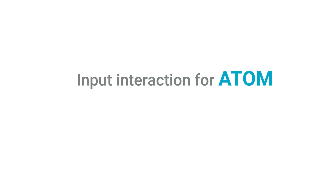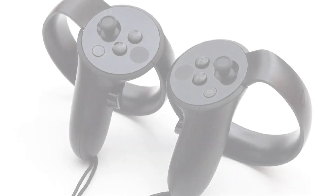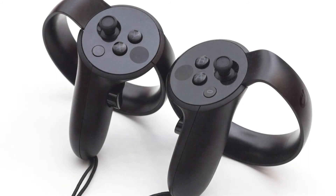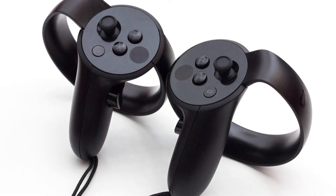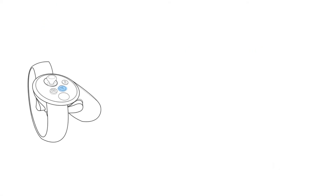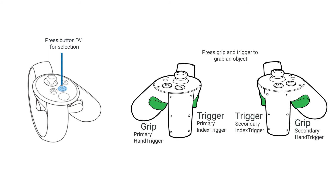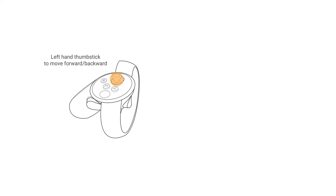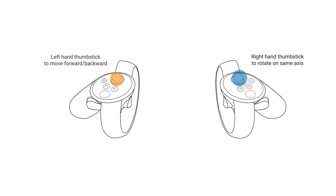Input Interactions for ATOM. We have used the Oculus Touch controller for selection and manipulation of virtual objects. Object selection is done through button A, whereas grabbing and manipulation is done through pressing the grip and trigger of the controller together. The thumbstick on the left hand allows the user to move inside the virtual environment, whereas the thumbstick on the right hand allows rotation of the virtual environment on the same axis.